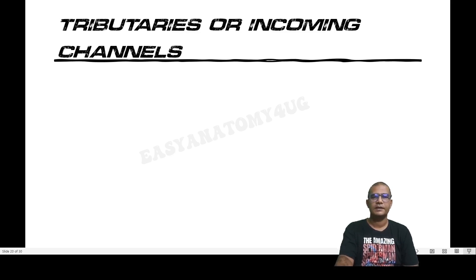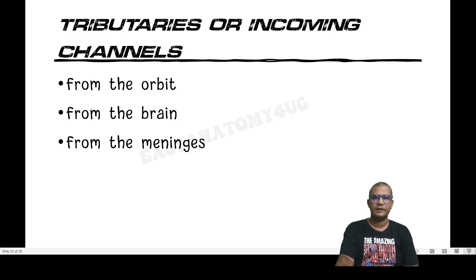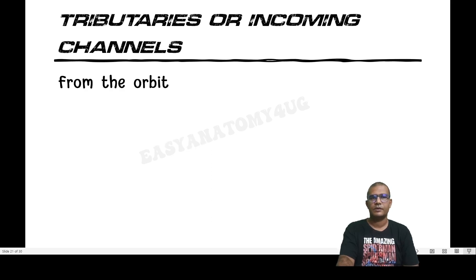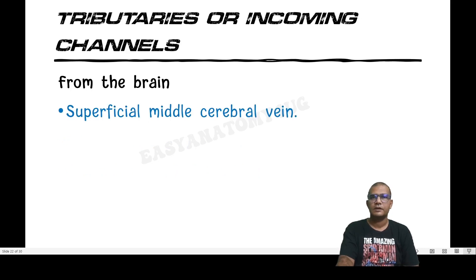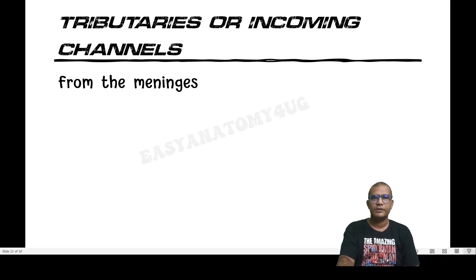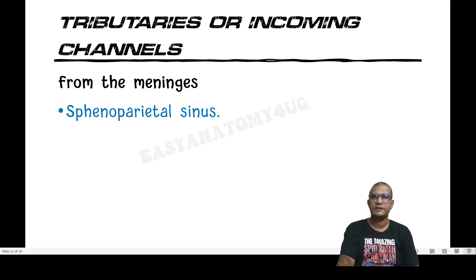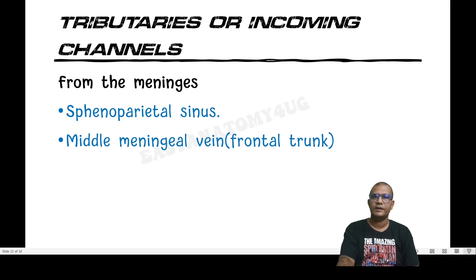The tributaries or incoming channels of the cavernous sinus are discussed under three headings: from the orbit — superior ophthalmic vein, inferior ophthalmic vein, and central vein of retina; from the brain — superficial middle cerebral vein and inferior cerebral vein; from the meninges — the sphenoparietal sinus, which drains toward the cavernous sinus and is present over the lesser wing of the sphenoid bone, and the frontal trunk of the middle meningeal vein.